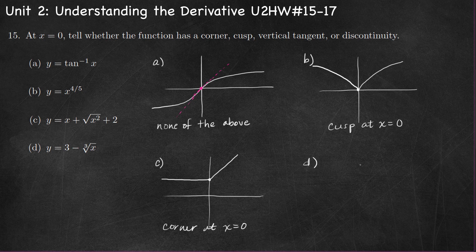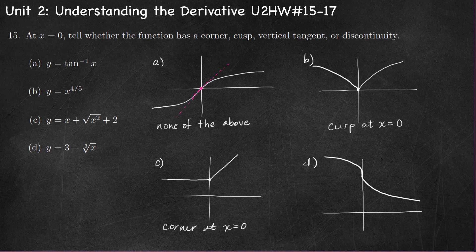Part D, let's sketch the graph of y equals three minus the cube root of x. The graph is continuous when x equals zero — there is a point there at x equals zero, y equals three, and the limit is three as we approach from the left and right-hand sides. We don't have a corner or a cusp. This is a vertical tangent — if I were to sketch the tangent line to the graph at x equals zero, it would be a vertical tangent line.